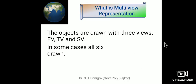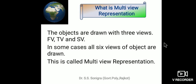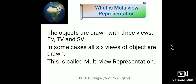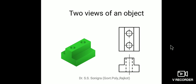What is multi-view representation? The objects are drawn with three views — front view, top view, and side view, as studied earlier. In some cases, all six views of an object are drawn; that is called multi-view representation. This is an object with two views: if you look from the front side it appears like a reverse T, and in the top view it appears differently. This is the top view and this is the front view.